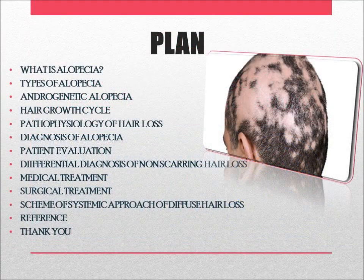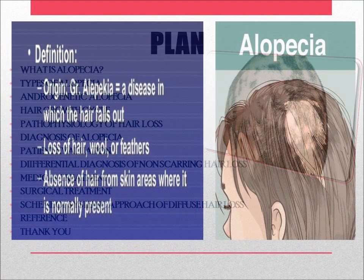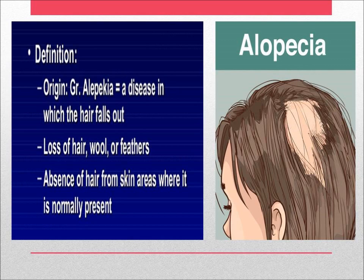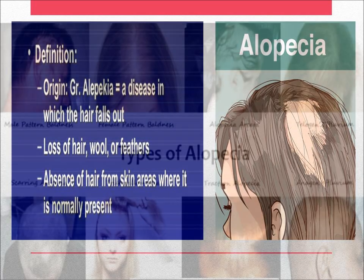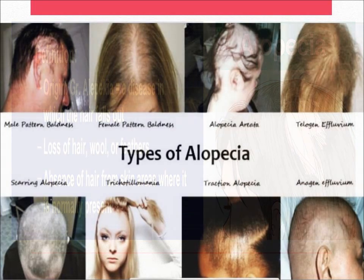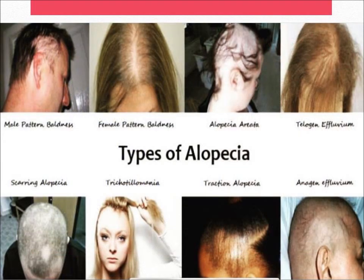These are the contents of my presentation. Alopecia is the partial or complete absence of hair from areas of the body where it normally grows, also called baldness.